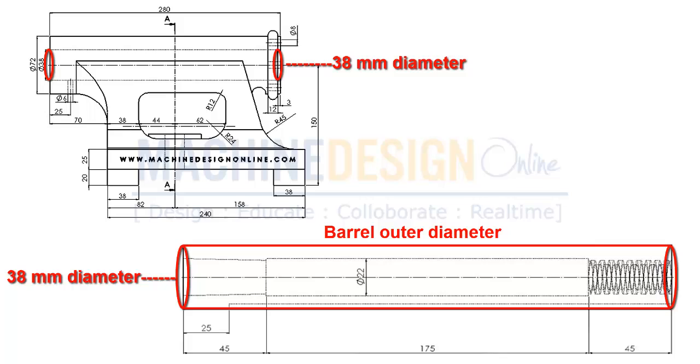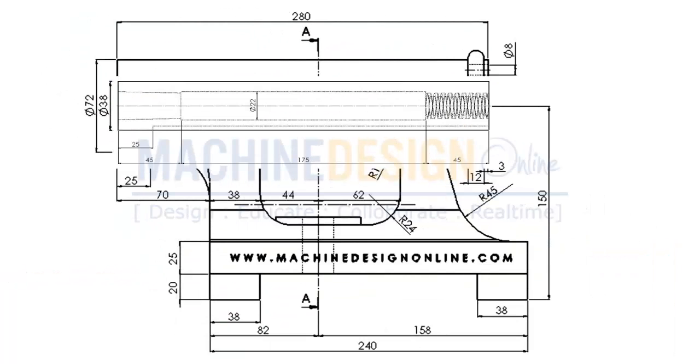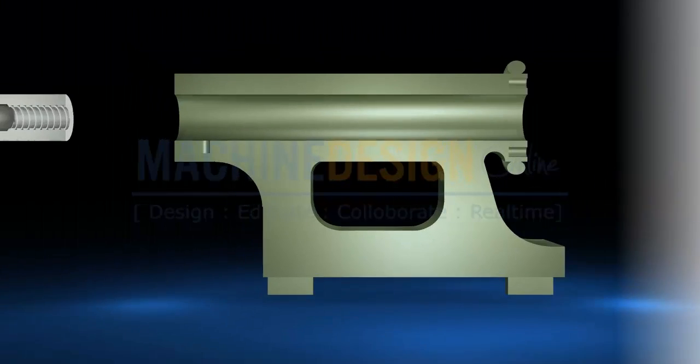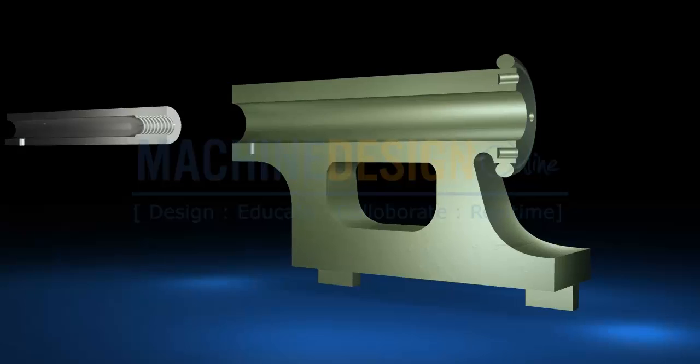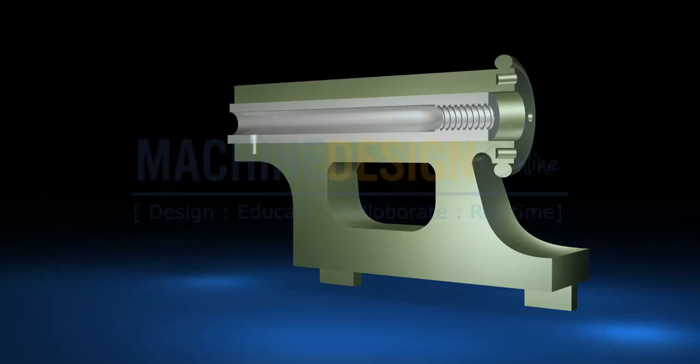Barrel outer diameter is 38mm and tailstock body inner diameter is also 38mm. That means barrel can easily fit inside the tailstock. Let's try to place it. It fit nicely, but do not know the exact position.